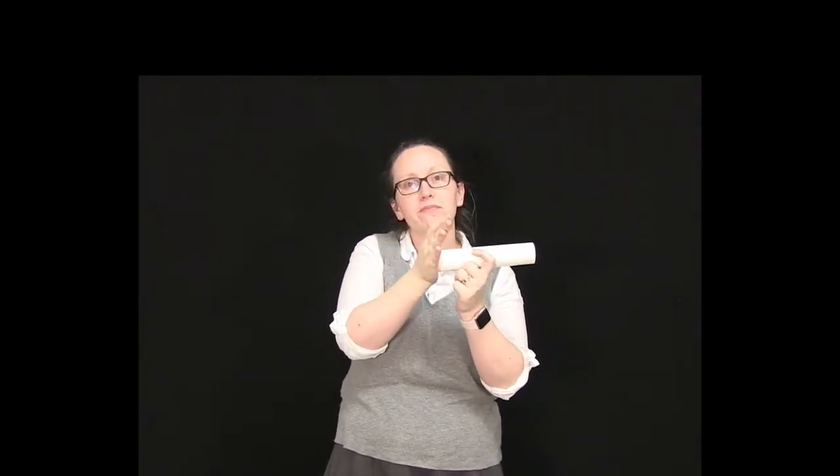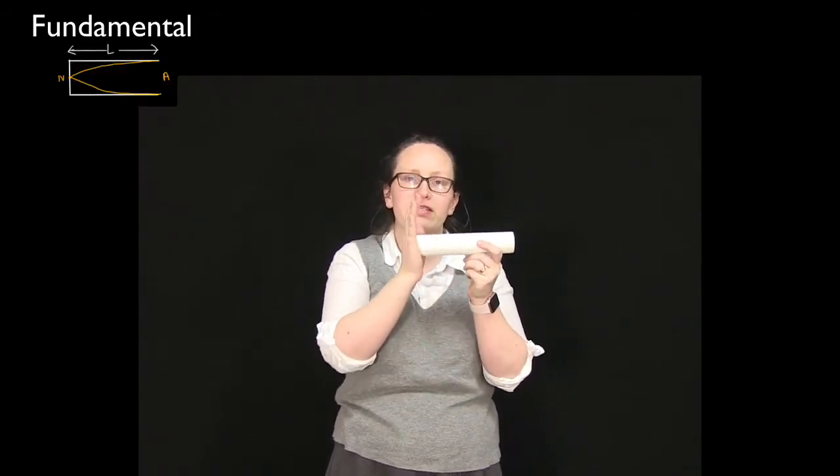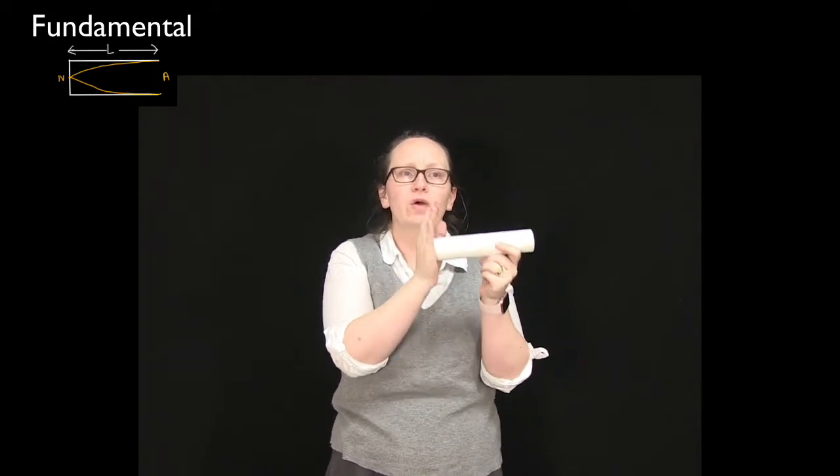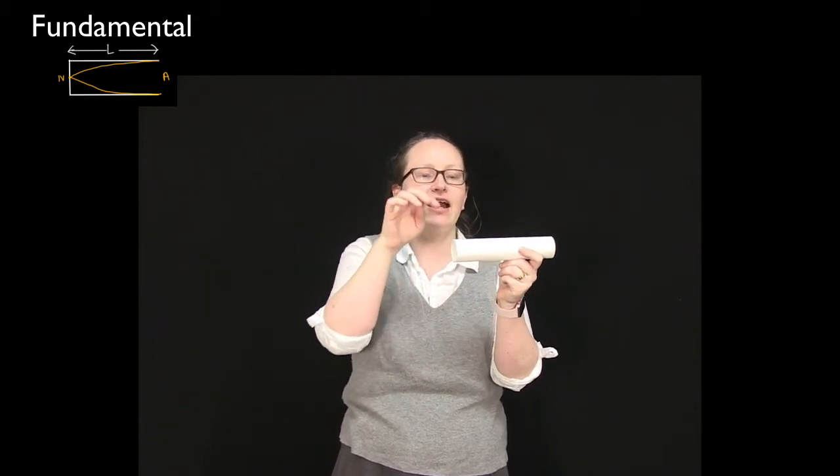We'll start by considering pipes that are closed at one end and open at the other. Pipes have a node at a closed end. This makes sense because the particles can't move backwards and forwards if they're stopped by the end here. So we have a displacement node at the closed end and we have a displacement antinode, which means the displacement is the maximum value, at the open end. So the first harmonic or the fundamental frequency for the pipe is the longest wavelength for which we're going to get a resonance. Now that'll occur when we have an antinode here and a node here.